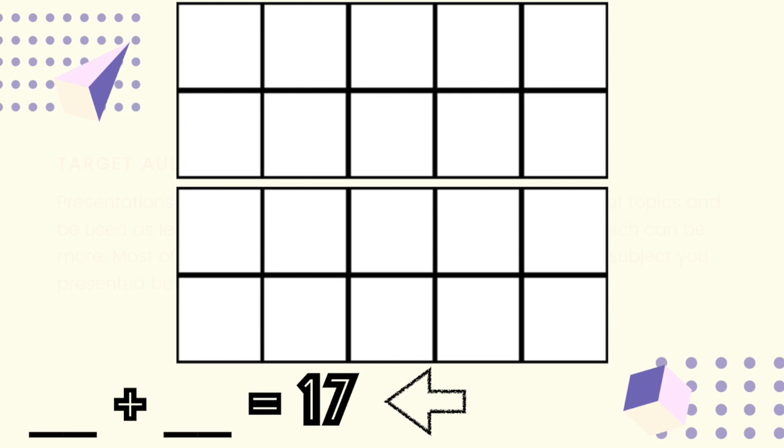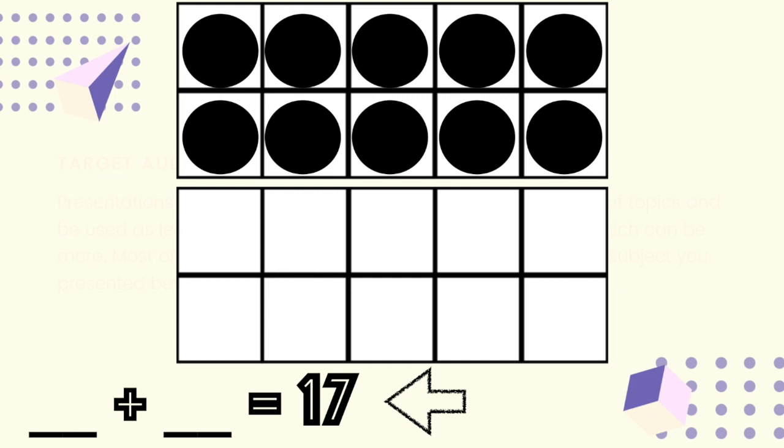The first thing I'm going to do is go ahead and fill up that first 10 frame. This is because 17 is greater than 10, so I know to make 17, I'll need 10.